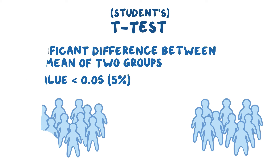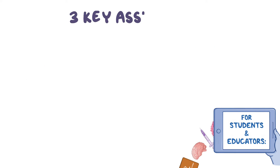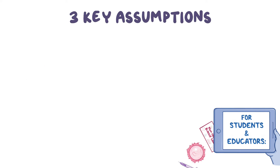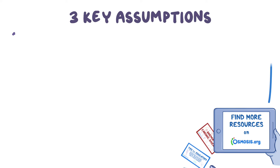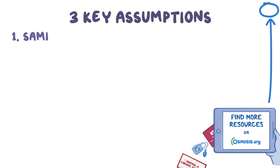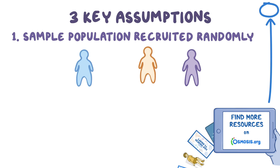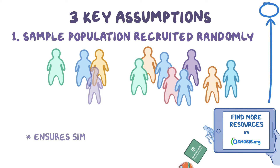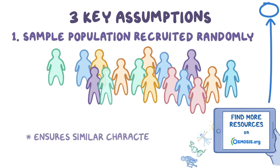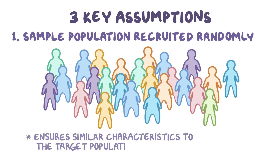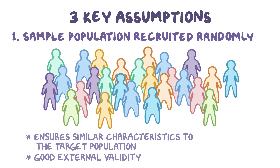When doing any parametric test, there are three key assumptions that we have to make about the population. Firstly, the sample population must have been recruited randomly. Choosing names randomly ensures that the people included in the study will have similar characteristics to the target population, ensuring that the results of the t-test can be applied to the target population, meaning it has good external validity.